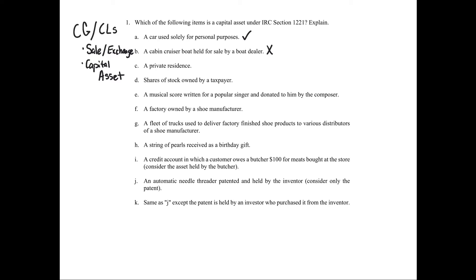Let's move on. C, a private residence. So personal use private residence. What is that going to be? Capital asset. For the same reason in A, right? You go through the six items, doesn't meet it. And again, almost all personal use property is considered a capital asset.